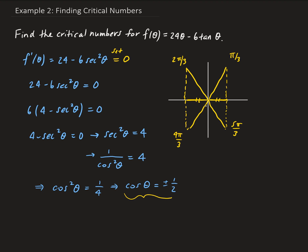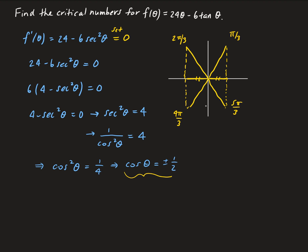Those are the four fundamental solutions between 0 and 2 pi: pi over 3, 2 pi over 3, 4 pi over 3, and 5 pi over 3. However, we can get more solutions by continuing to go around the circle, adding multiples of 2 pi and so on. So we want to write these in a general form.